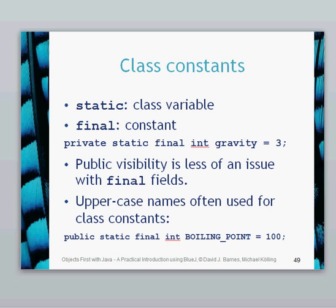So our class constants look like this. Like I say, we use the static and the final keywords. That's a full definition there. So a definition in the assignment where we've got private static final int gravity. The public visibility is less of an issue with final fields because we can't change them. And then the uppercase names are often used for class constants. And those, as shown in the example there for BOILING_POINT, those are kept uppercase and using an underscore there. So we can guarantee them that these are going to be our constants.